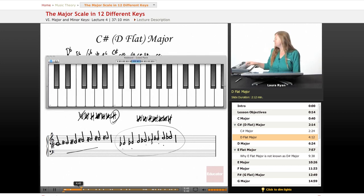C sharp: C sharp, D sharp, E sharp, F sharp, G sharp, A sharp, B sharp, C sharp. Let's think about it as D flat: D flat, E flat, F, G flat, A flat, B flat, C, D flat. D flat feels a little easier to think about and play than C sharp.